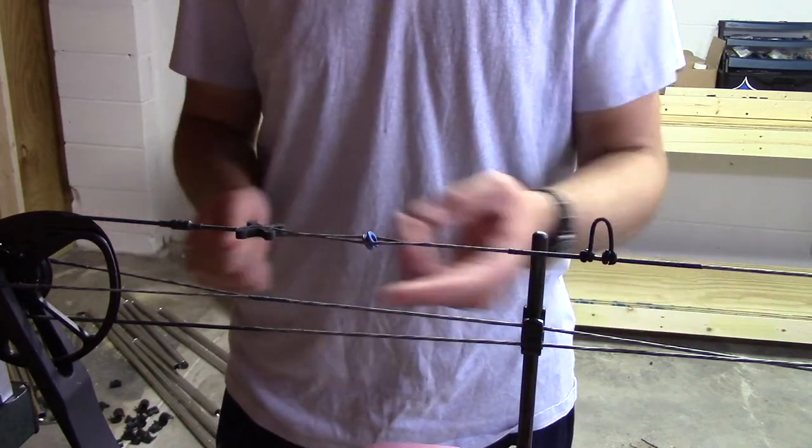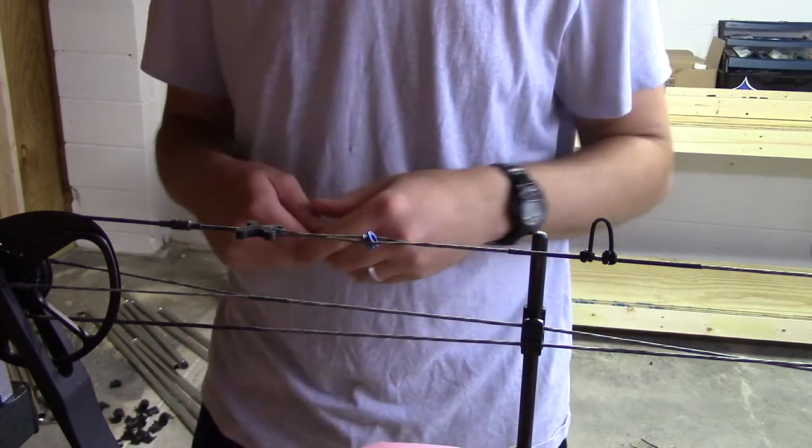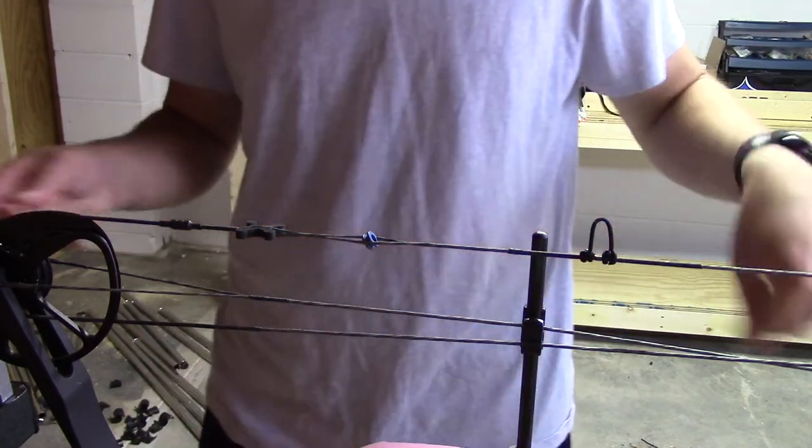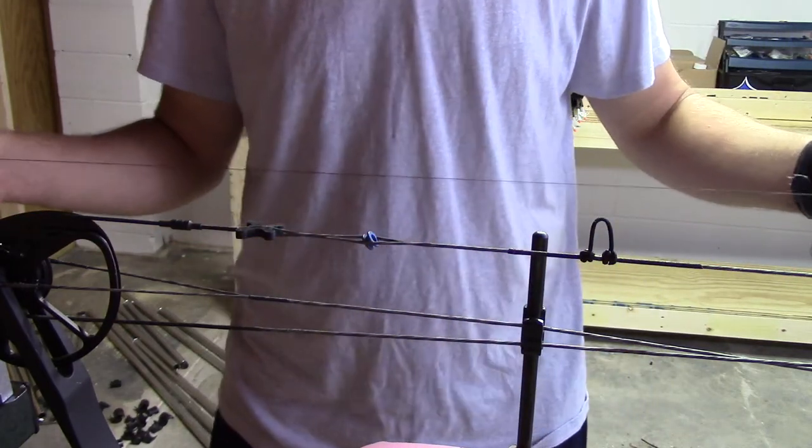and use the longest bits, which are mostly going to be your cables probably. Use the longest bits to tie in your peeps, and tie in your string silencers, whatever else you need. You can pretty much get a couple years worth out of just one string.